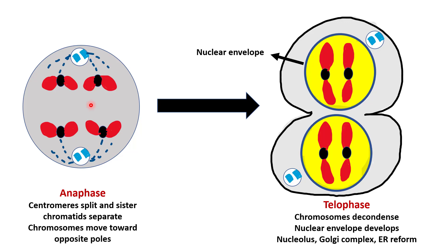The next phase is Telophase. Here chromosomes start to decondense and the nuclear envelope reforms. The nucleolus, Golgi complex, and endoplasmic reticulum also reform. This is followed by cytokinesis.